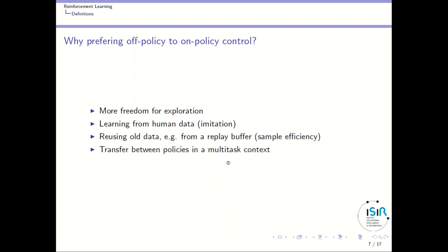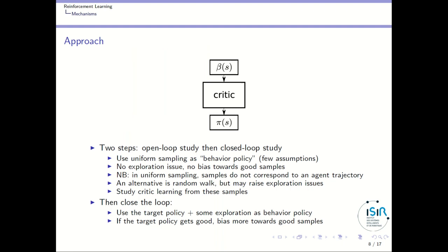A third case where off-policy control is interesting is the multi-task context. You can generate samples to learn a policy for one task and then reuse the same samples to learn a second task with a different policy. From the same rich dataset, you can learn several tasks with different policies rather than generating new data for each task, which greatly improves sample efficiency.